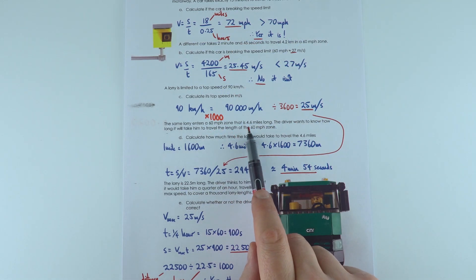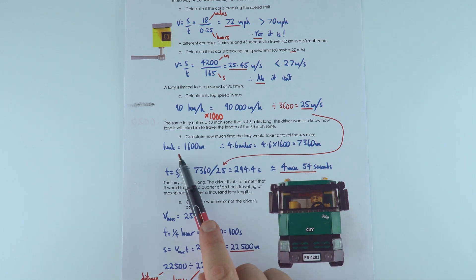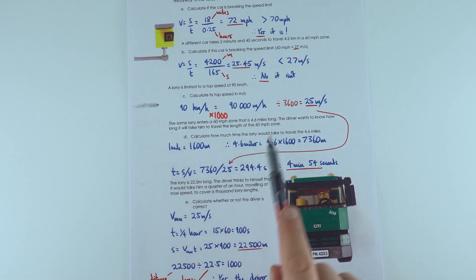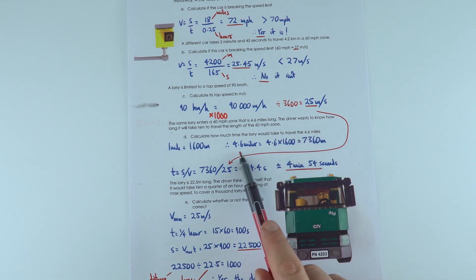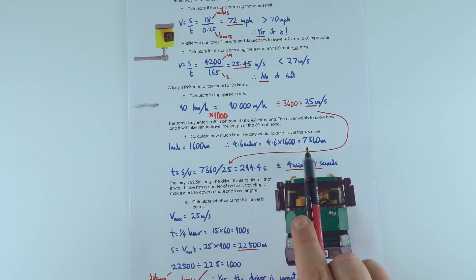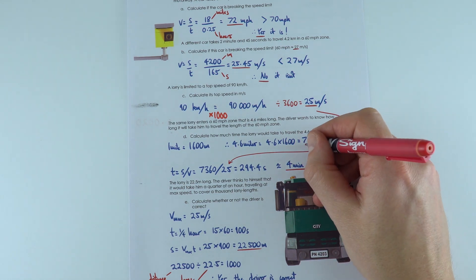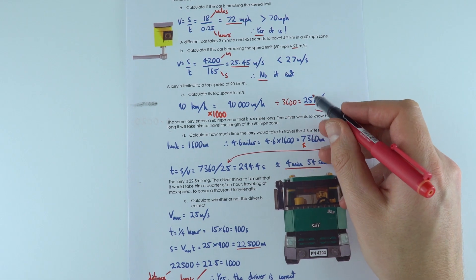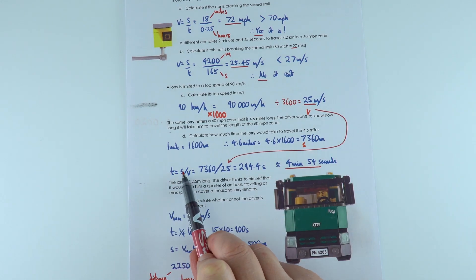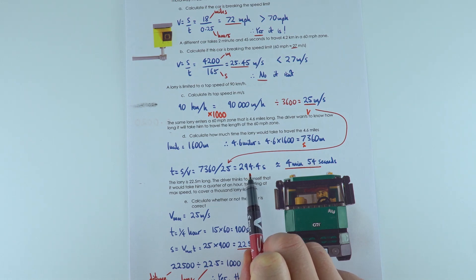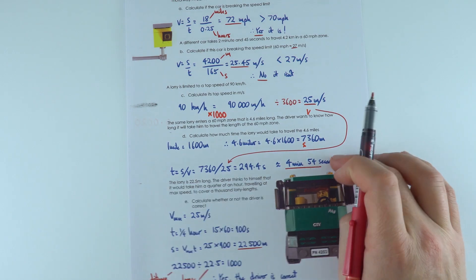The driver enters a 60 miles per hour zone that's 4.6 miles long — so how long would it take to travel? One mile is 1,600 metres, so the distance is 4.6 times 1,600 equals 7,360 metres. The speed V is 25 metres per second, which is the maximum speed. Therefore, time equals distance divided by speed, which gives 294.4 seconds. I've given that answer as 4 minutes 54 seconds — just under 5 minutes.